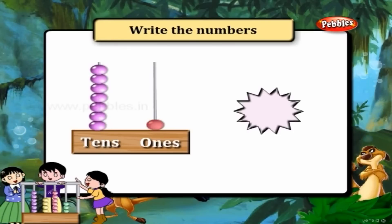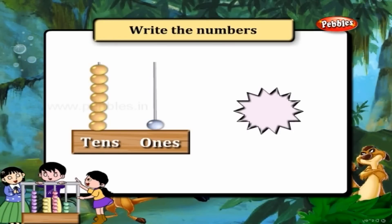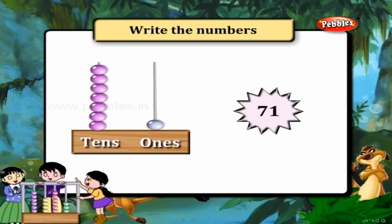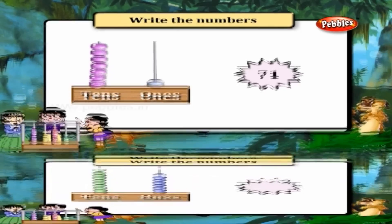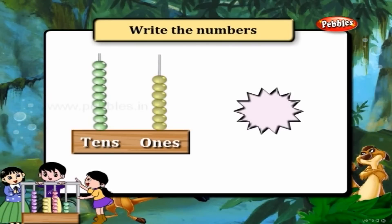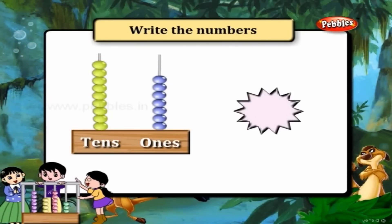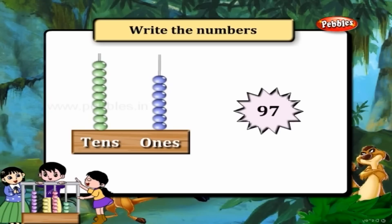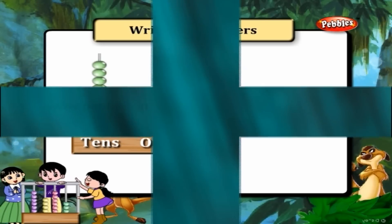5 ones and 6 tens — that is 61. 7 ones and 9 tens — that is 97.